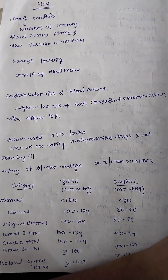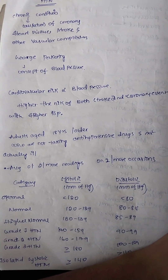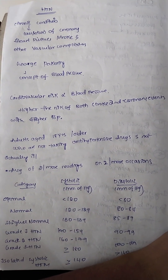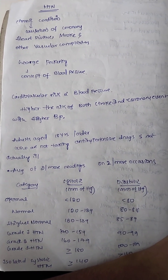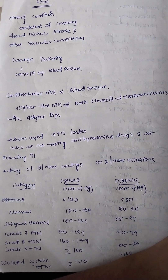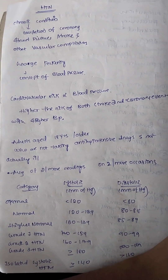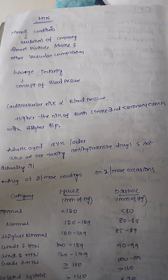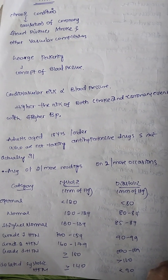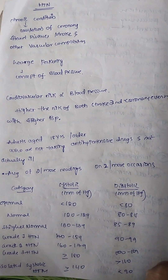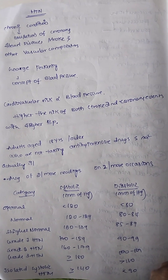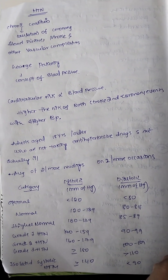What is the criteria for diagnosing hypertension? Adults aged 18 years or older who are not taking antihypertensive drugs — meaning they are not under treatment — and are not actually ill. The average of two or more readings on two or more occasions should be considered.